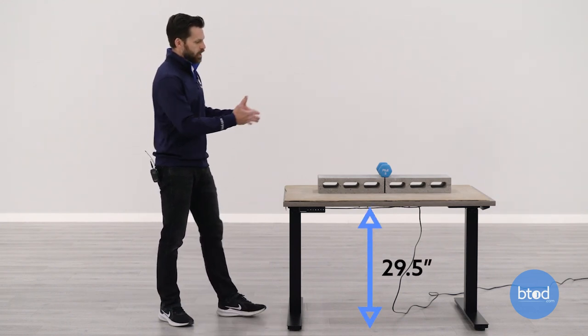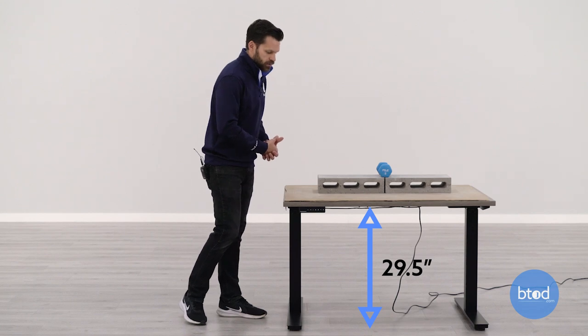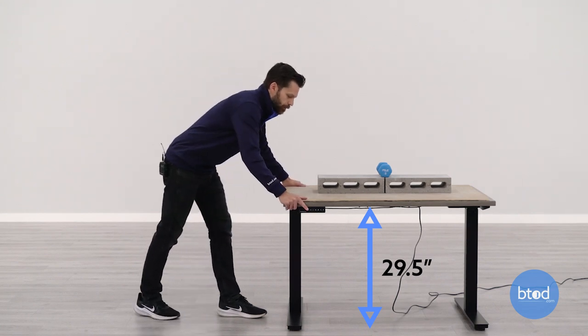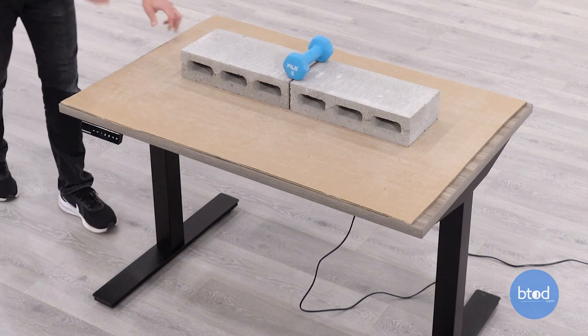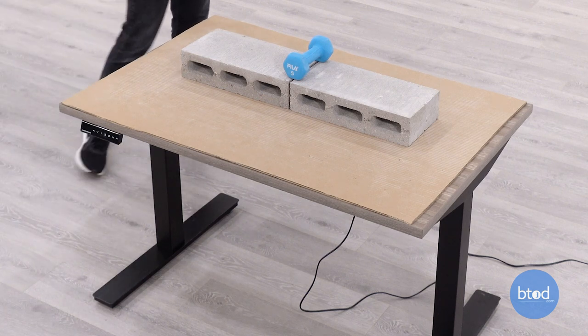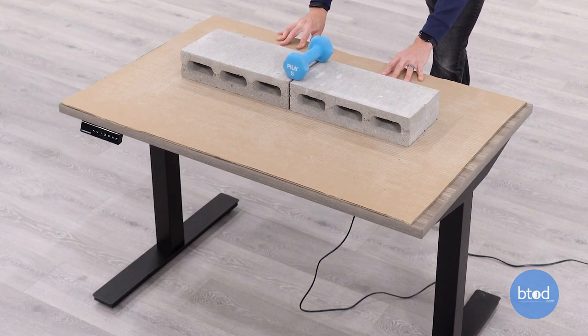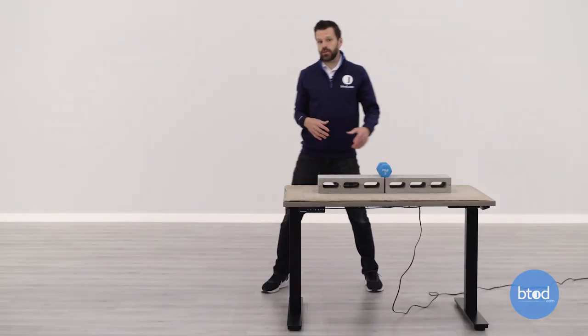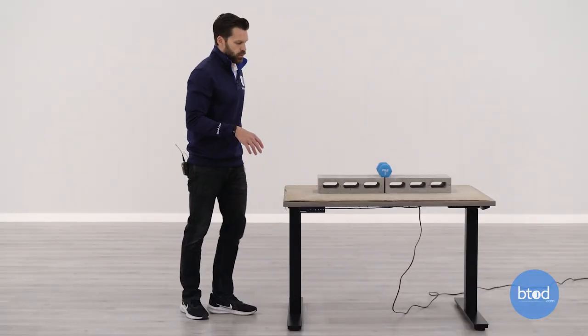Now this is 29 and a half inches with 100 pounds on the surface. We're going to check the wobble first, and like many of the desks that we've tested, it doesn't have any wobble issues at the bottom height. Same is true for the front to back rocking motion. There is no movement.